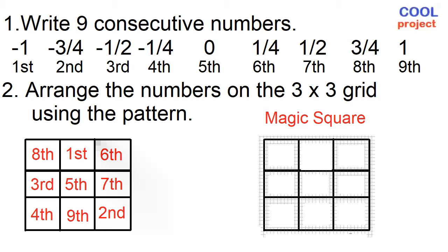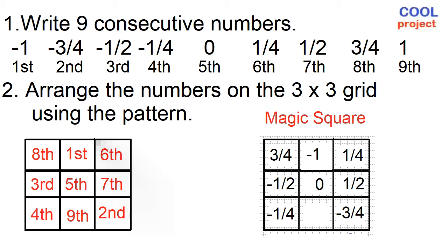First is negative 1, second negative 3 fourths, third negative 1 half, fourth negative 1 fourth, fifth 0, sixth 1 fourth, seventh 1 half, eighth 3 fourths, ninth 1.